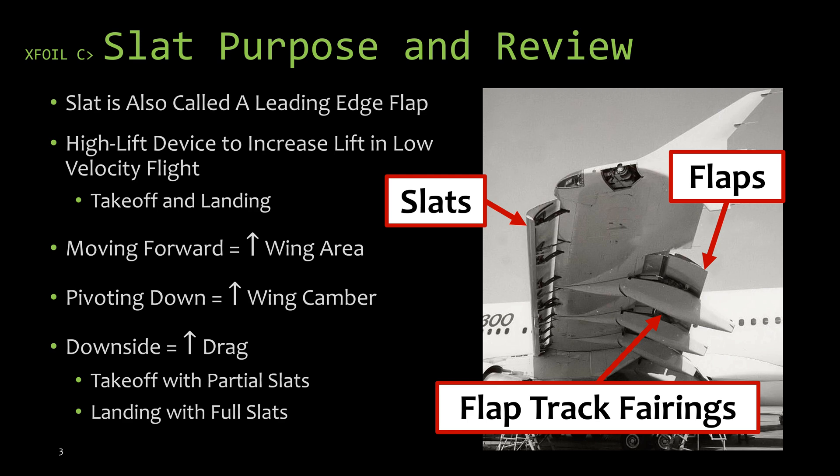When you move the slat forward, you're increasing the wing area as well as usually increasing the wing chord. When you pivot a slat down, you're increasing the camber of the wing. And this has its pros and its cons. It allows you to create more lift in low velocity flight at the expense of also increasing your drag.